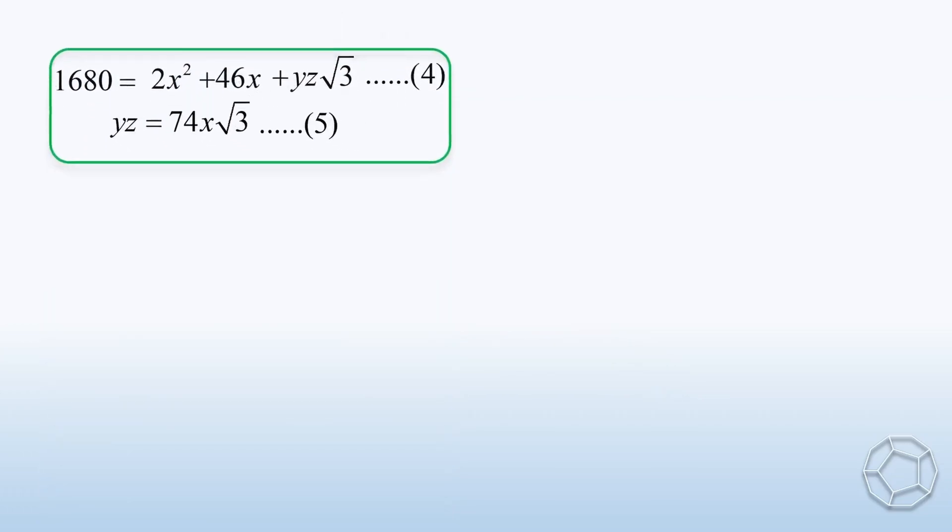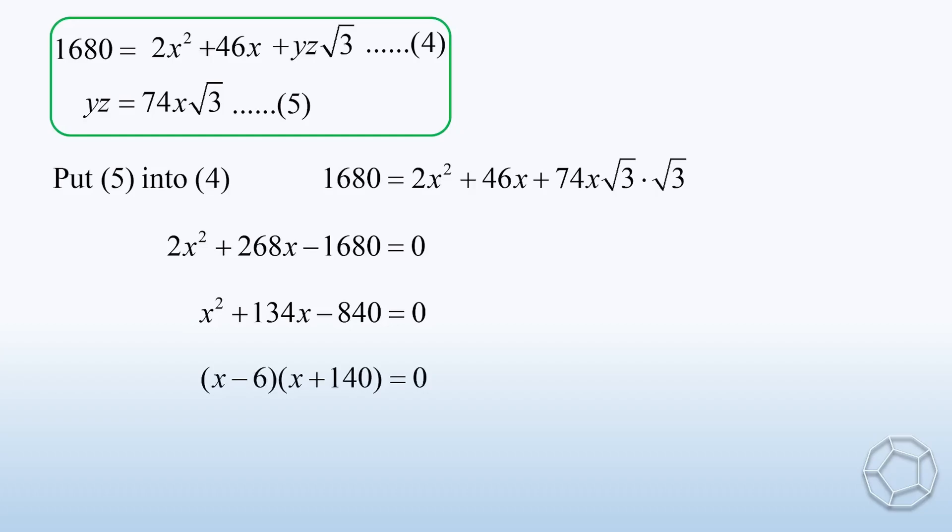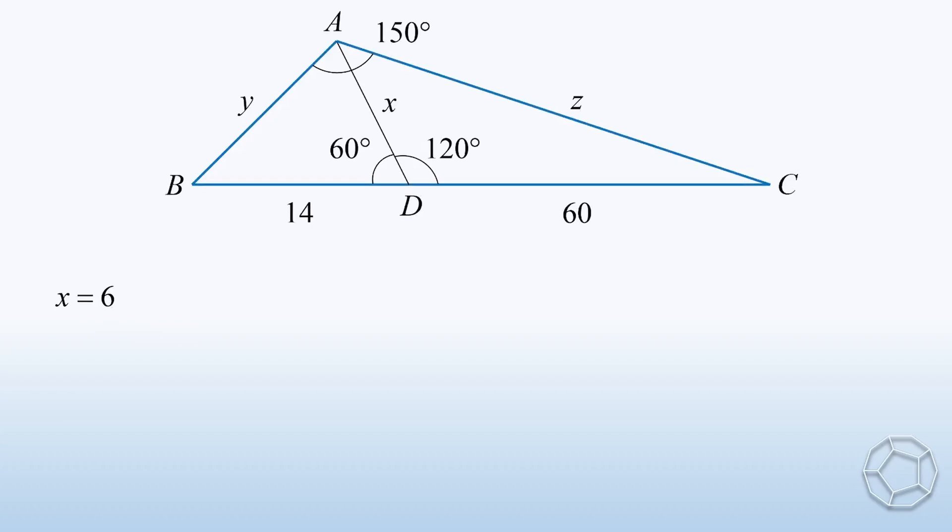Great! We can combine the two results together. Putting equation 5 into equation 4, then it has only one unknown X. Simplifying a little bit, we can see that it is a simple quadratic equation. X squared plus 134X minus 840 is equal to 0. Moreover, it is not hard to factorize it. So, we have X is equal to 6 or negative 140. Clearly, this value is rejected because length must be positive. Then, we can answer the question at the beginning. Recall that the area of triangle ABC is equal to 37X times square root 3 over 2. Putting X is equal to 6, we get the answer, which is equal to 111 times square root 3.